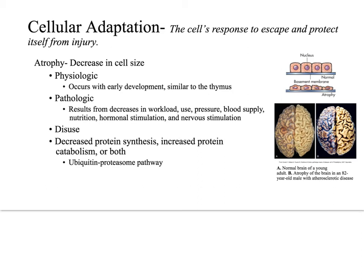Let's discuss cellular adaptation, or the cell's response to escape and protect itself from injury. A main goal of the body is to maintain homeostasis, which is the steady state that cells exist in normally — an equilibrium of the cells within their environment that allows for adequate function. When this is disturbed, there can be a predisposal for the onset of pathology. However, cells can be adaptable within their physiologic limits.